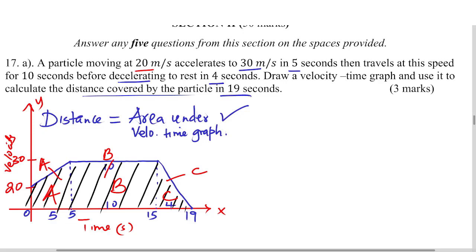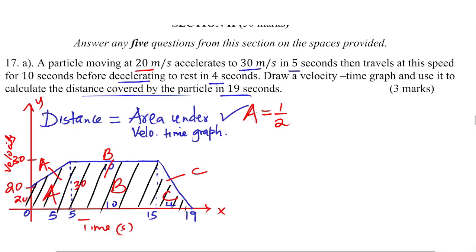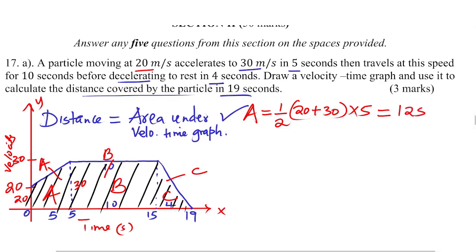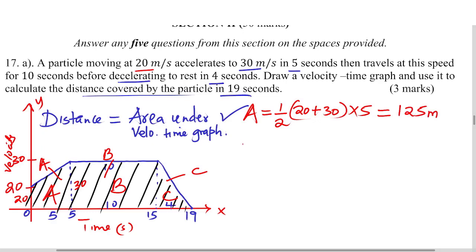Shape A is a trapezium. The area of a trapezium is half times the sum of the two parallel sides. As you can see, one side is 30 and the other is 20. So area A equals half times (20 plus 30) multiplied by the height, which is 5 (from 0 to 5). That gives 25 times 5, which is 125 meters.